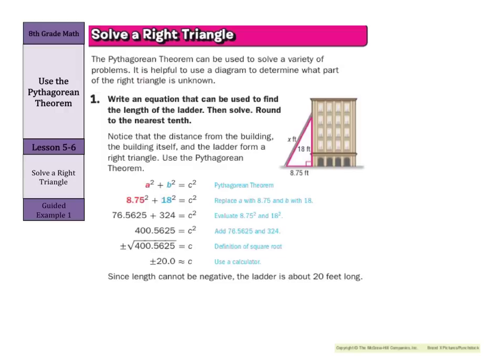Our first guided example says to write an equation that can be used to find the length of the ladder. Then solve and round to the nearest tenth. Well, we're given a horizontal distance here of 8 and 75 hundredths, or 8 and 3/4. And our vertical distance is 18, and our right angle is right there. Remember, our two legs come off of the right angle, and those can be A and B. And our hypotenuse is opposite, which is C.